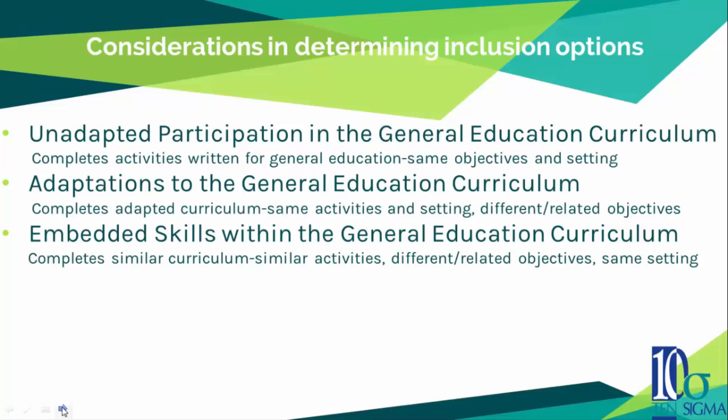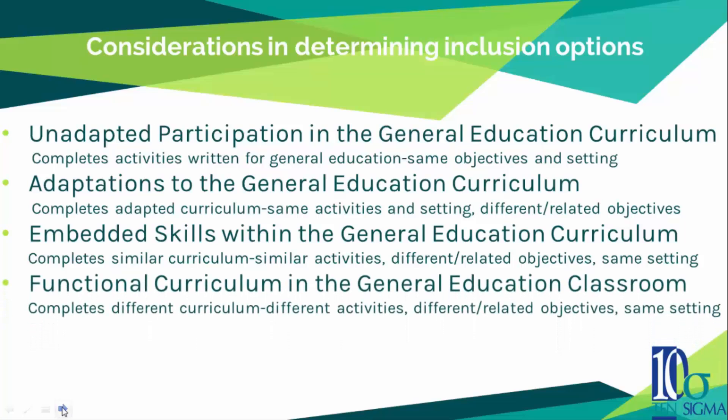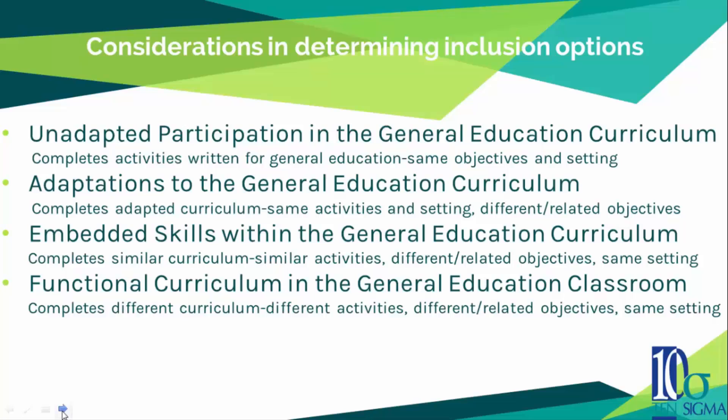The fourth option is functional curriculum in the general education classroom. The student completes different curriculum with different activities and different but related objectives, and they are in the same setting as general education. The last inclusion option is functional curriculum out of the general education classroom, where the student completes different curriculum with different activities and objectives in a different setting.